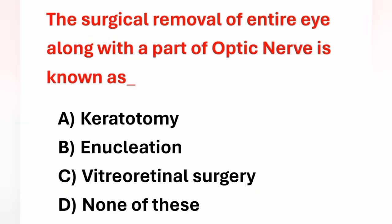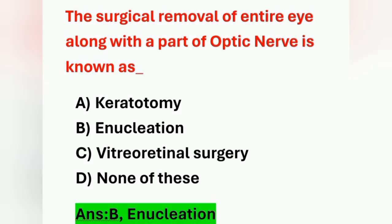Next question: The surgical removal of the entire eye along with part of the optic nerve is known as? Options: A) Carotid tummy, B) Enucleation, C) Vitreoretinal surgery, D) None of these. Removal of the entire eye along with part of the optic nerve is known as enucleation. Option B is the correct answer.